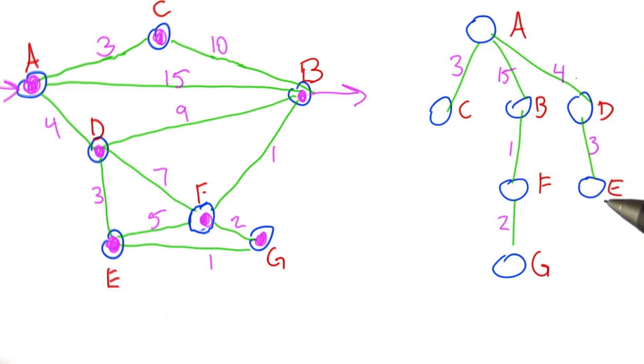So these are supposedly the shortest paths in terms of number of hops to all these nodes. Does that actually make sense? One hop to C, one hop to B, one hop to D, two hops to F, two hops to E, three hops to G. One, two, three - yep, there's no faster way to get to G.